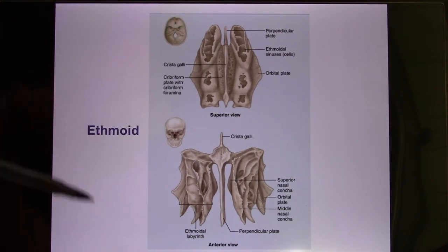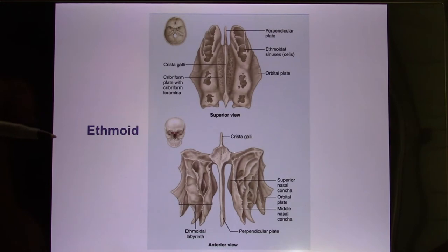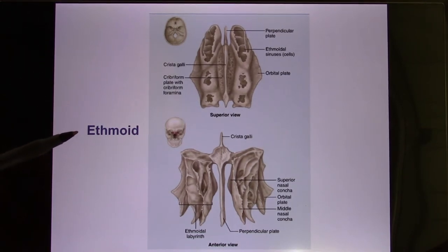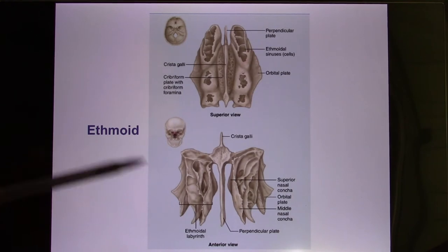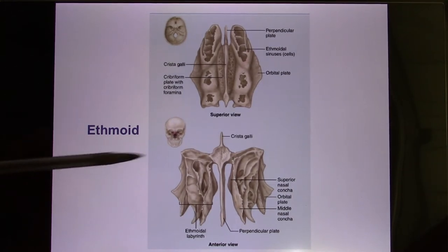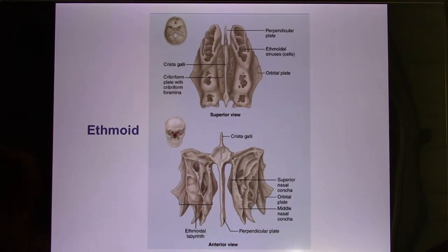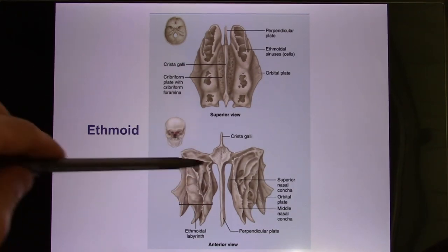One function of the nasal cavity is to heat up the air, since the air can be dry and cold, especially in winter, while your lungs are humid and warm. To increase surface area for heating, a lot of blood flows in here, which is why the ethmoid has a lot of folding.